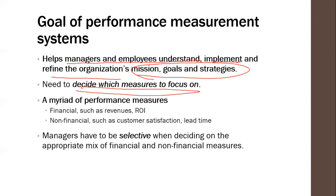Each of those activities could have measures or key performance indicators. Performance measurement systems also define which are the more important ones in the organization. Usually there are weights in a performance measurement system — for example, your performance is 30% based on whether you exceeded your sales target. This guides individuals on which measures to focus on among the myriad of tasks that are important.